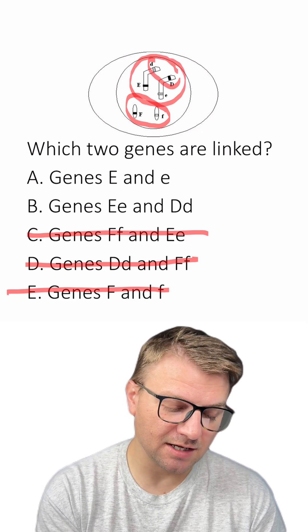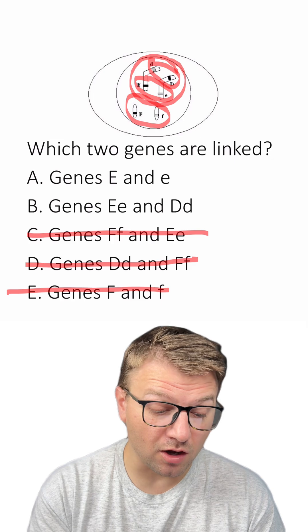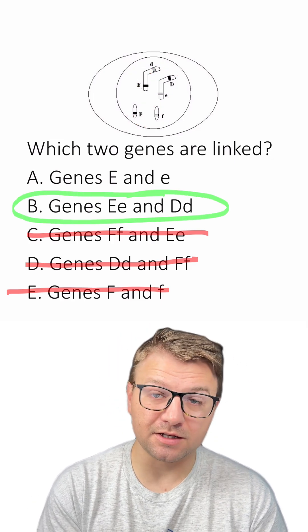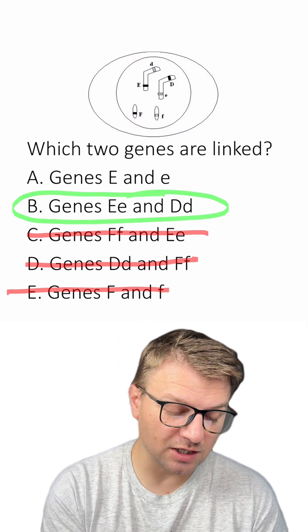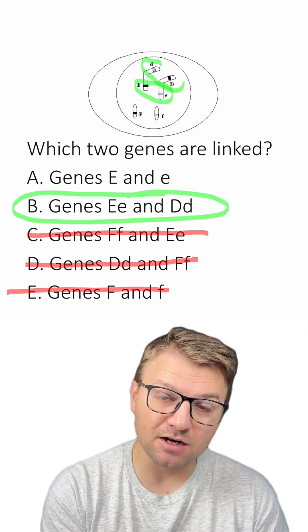If we look at our other chromosome, we can see that D and E are located on that same chromosome. So answer B here is the correct answer because gene E and D are going to be linked.